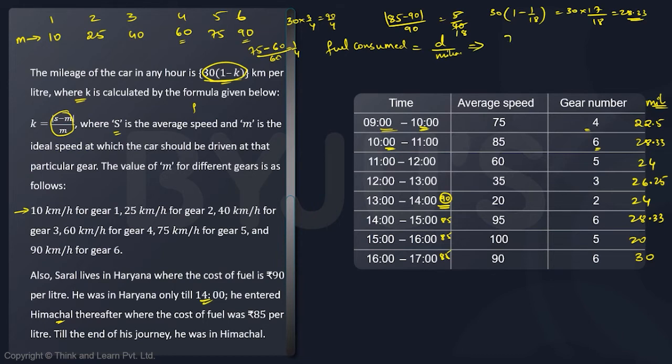For the first hour it is 75 by 22.5. This is 75 by 45/2, which is 10 by 3. So the fuel consumed for the first hour will be 10/3 liters. Remember there is a formula - distance traveled by mileage is your fuel consumed. If you write that for everything, you're going to quickly get the fuel consumed like this: 3, then you will get 2.5, then 4/3, then 5/6, 57/17, then 5 and then 3.